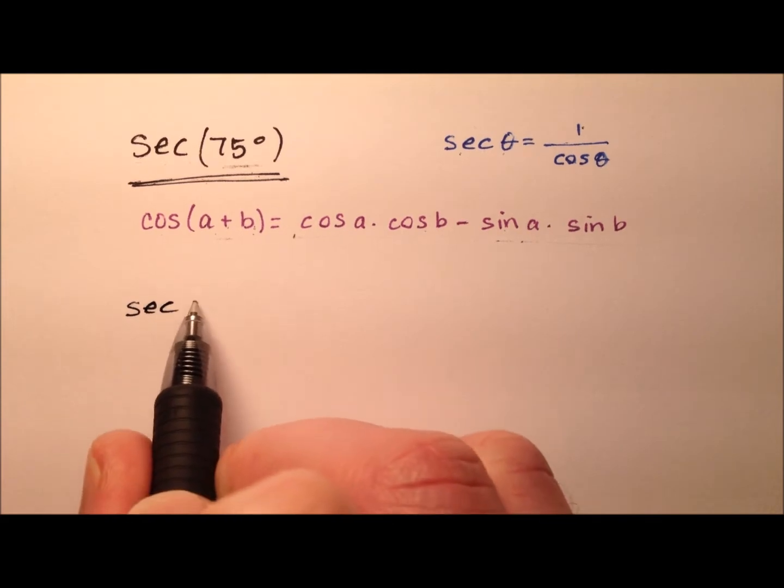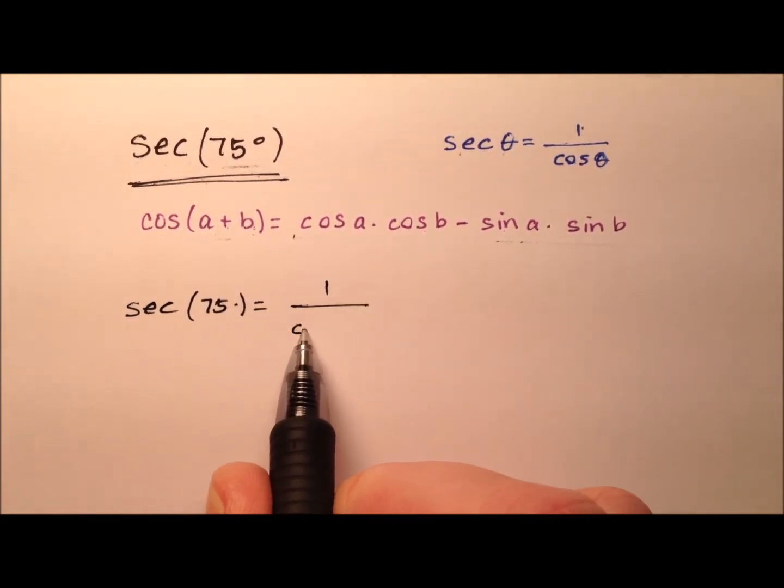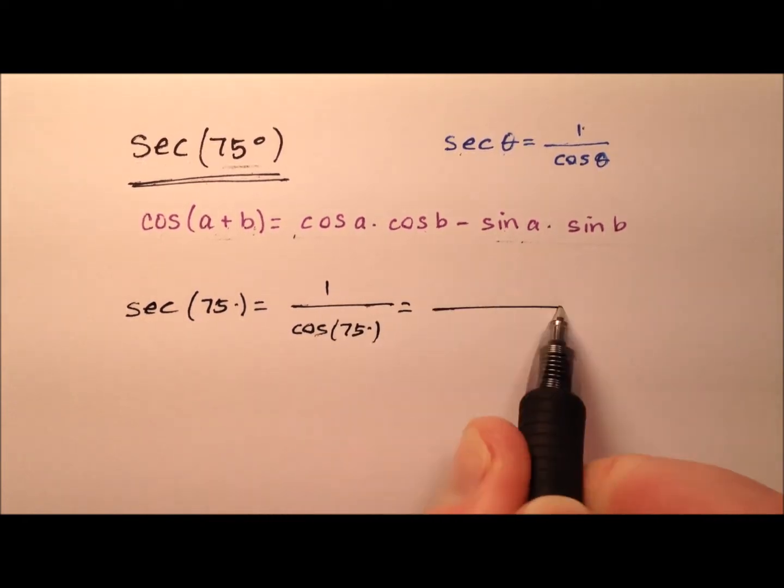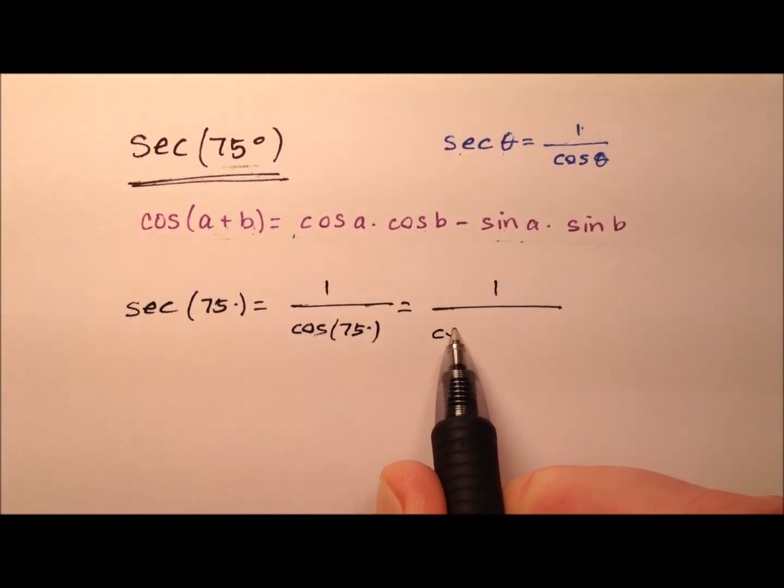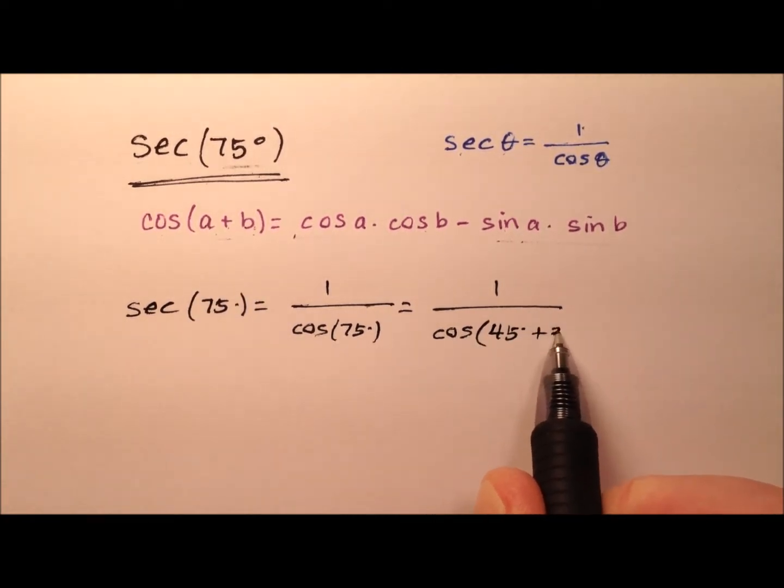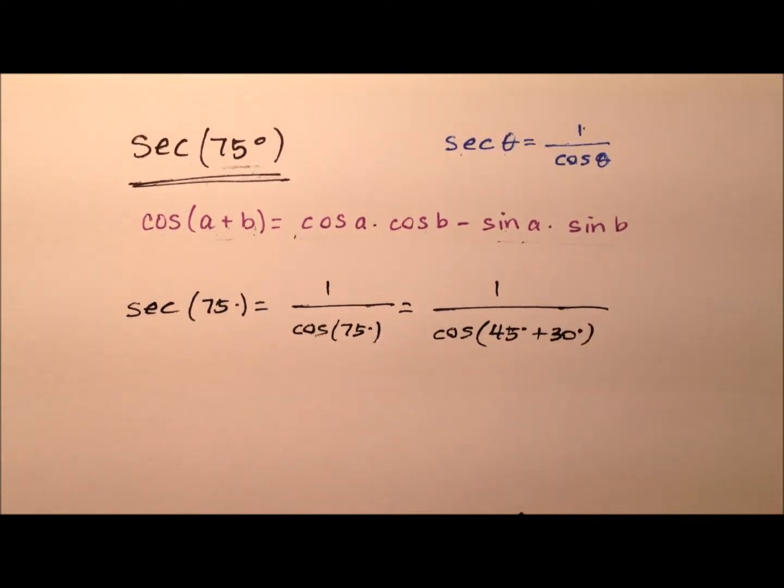So if the secant of 75 can be rewritten as 1 over the cosine of 75, let's find those two angles. For 75 degrees, how about we use 45 and 30? Because 45 degrees and 30 degrees add up to 75 degrees.